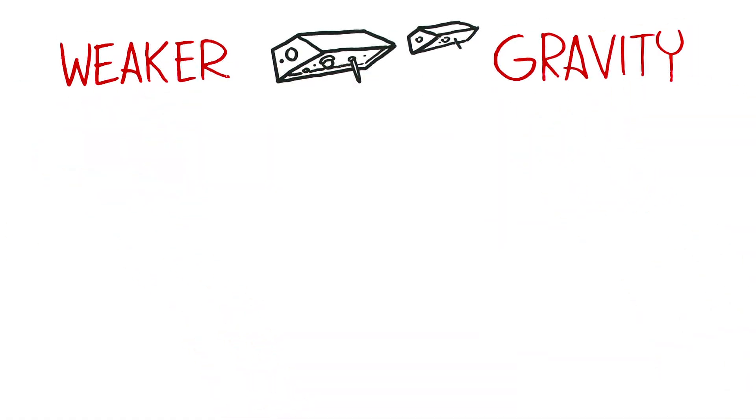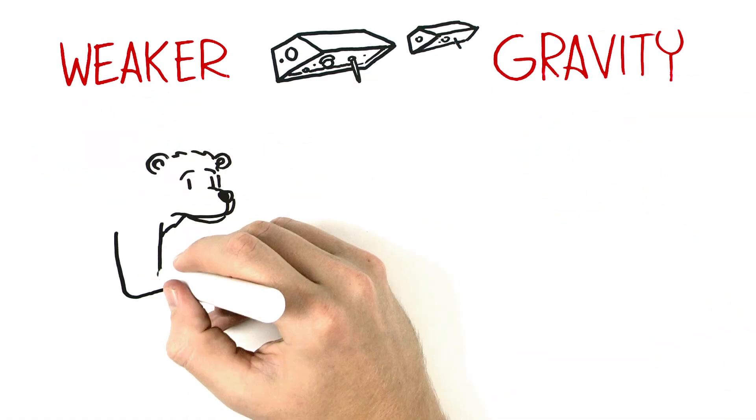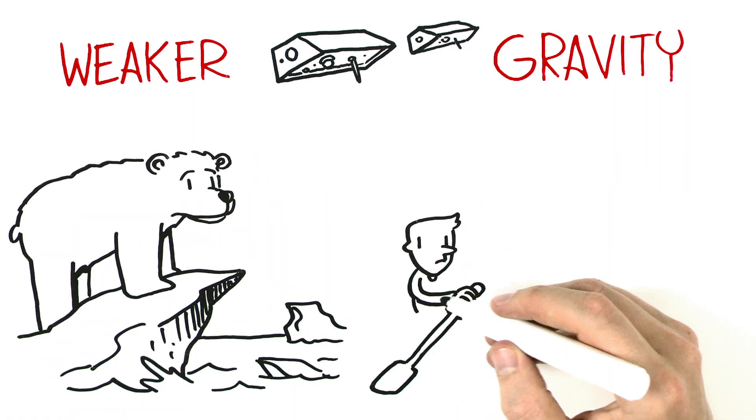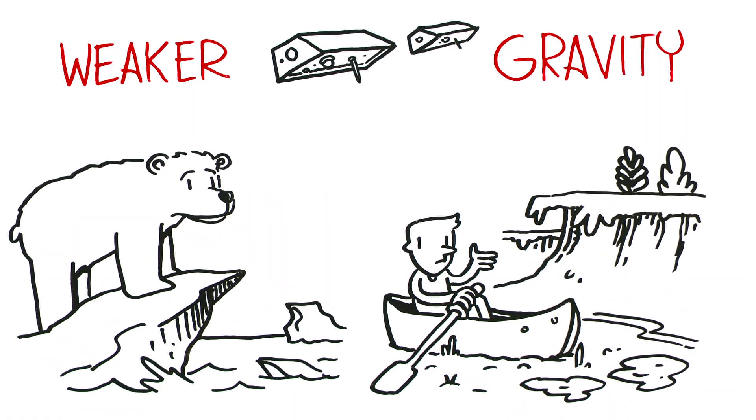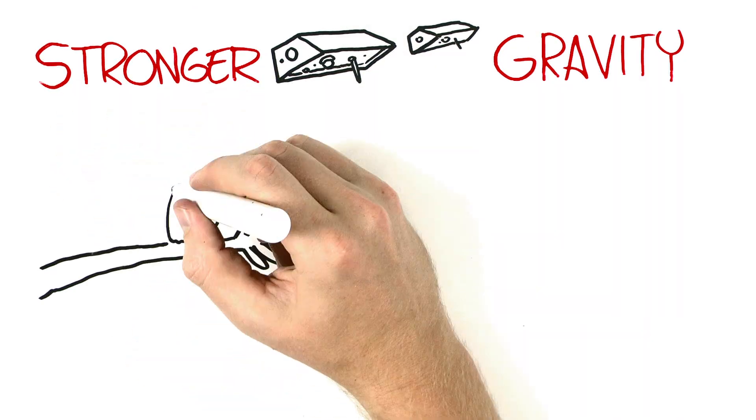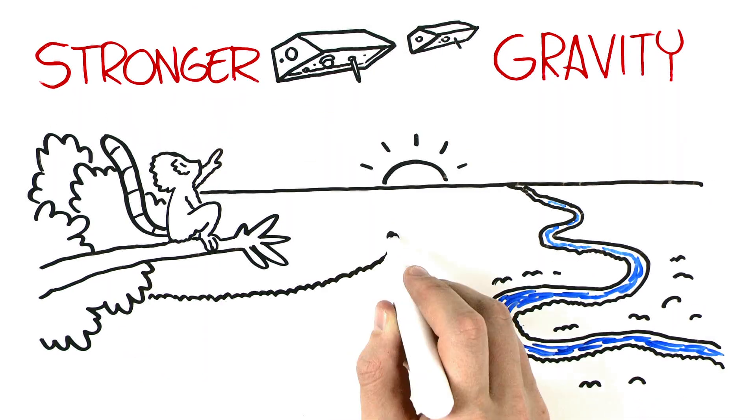Weaker gravity means there's less water in that spot. This can tell us where a glacier is melting or a severe drought is drying up lakes. And stronger gravity? More water, such as in the rainforest in the Amazon.